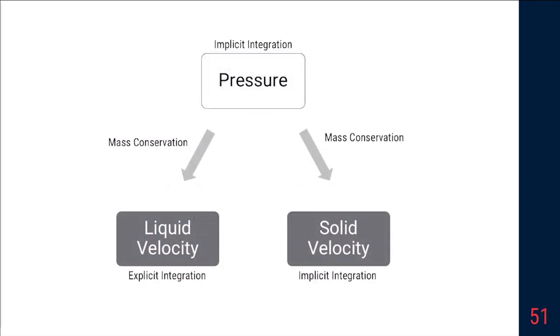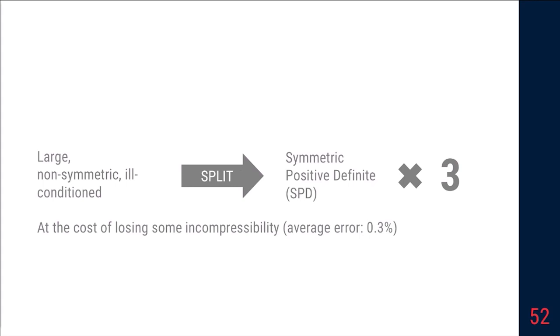Now with the pressure in hand, we then insert it back to the original equations for solid and liquid velocities. To handle stiff material, we again integrate solid velocity implicitly for stability. In summary, we convert a fully coupled large non-symmetric and ill-conditioned system into three independent smaller symmetric positive definite systems, which are much easier to solve, but at the cost of losing some incompressibility, although in practice we didn't observe the artifact due to this.